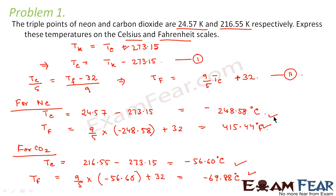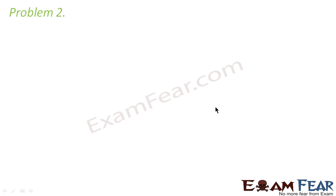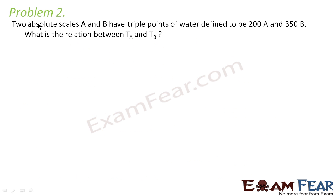In order to do the interconversion between the different scales of temperature, it is very much required that you remember the correct relation between the different scales. Now let us look at problem 2. It states: two absolute scales A and B have triple points of water defined to be 200A and 350B.